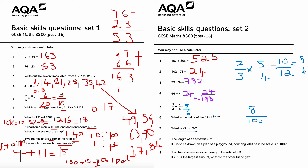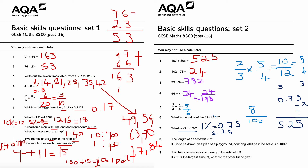Question number seven: what is 7% of 75? First, find 1%: divide 75 by 100 to get 0.75. Then to find 7%, multiply 0.75 by 7. Working through: 7 times 5 is 35, write 5 carry 3; 7 times 7 is 49, plus 3 is 52, write 2 carry 5; 7 times 0 is 0, plus 5 is 5. The answer is 5.25. This topic is percentages of amounts.